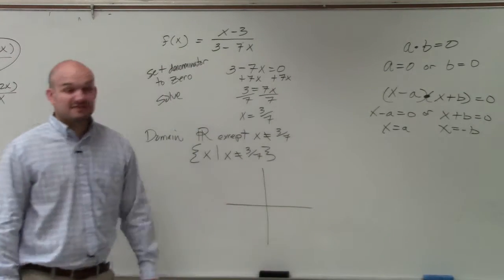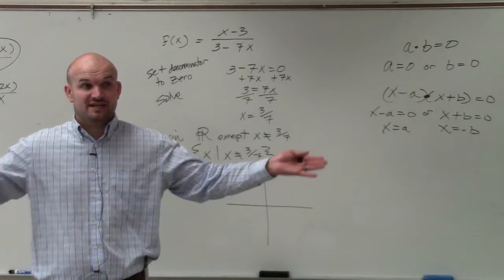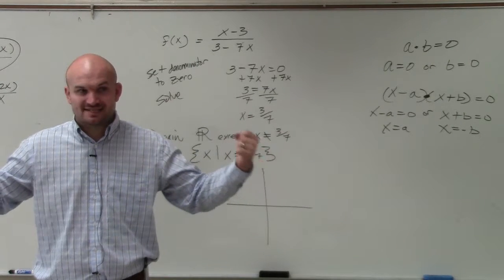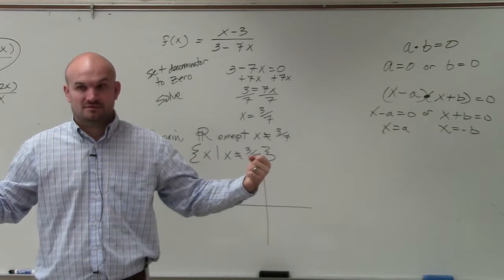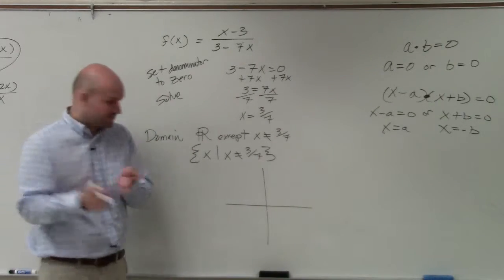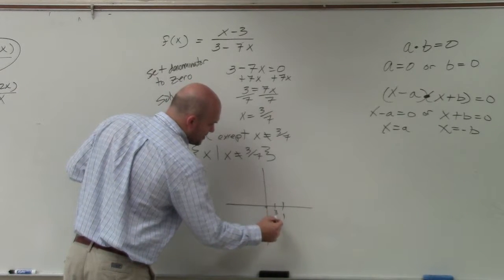So if you're going to graph this, now again, our implied domain is negative infinity to infinity, right? Except what is the only value x cannot be in this domain? 3 over 7. So 3 over 7 is between 0 and 1. Would everybody agree? So here's 0, here's 1, right? So let's just say here's 3 over 7.